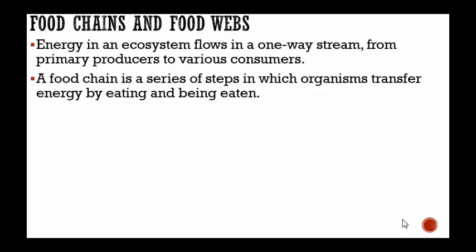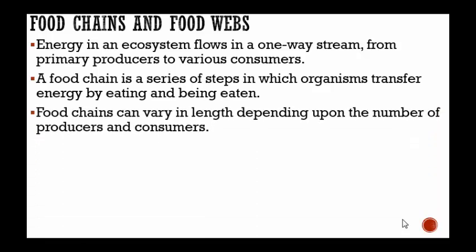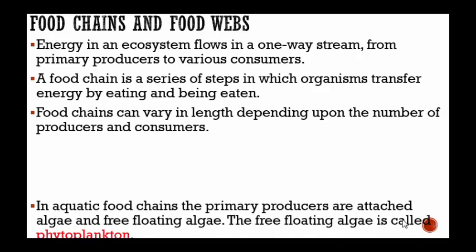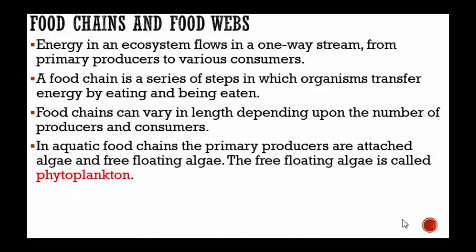A food chain is a series of steps in which organisms transfer energy by eating and being eaten. Food chains can vary in length depending upon the number of producers and consumers that are in the ecosystem.